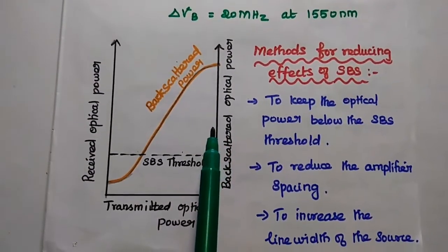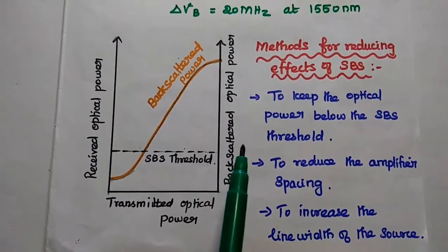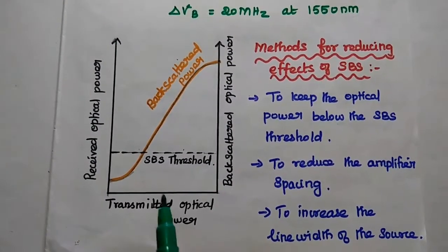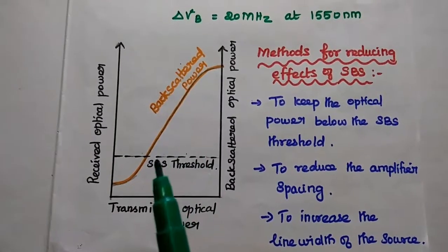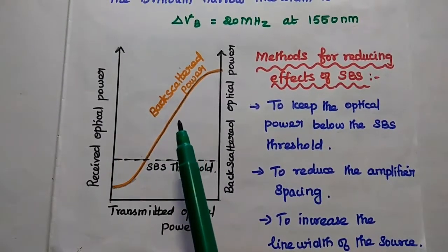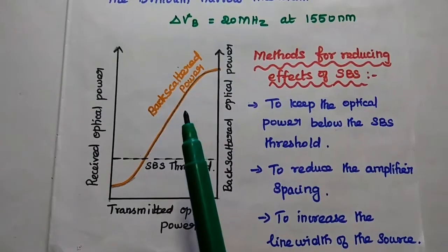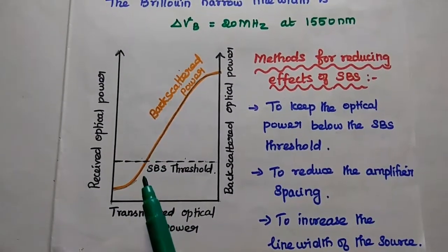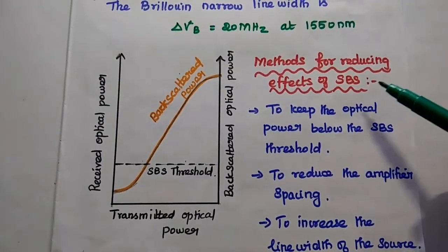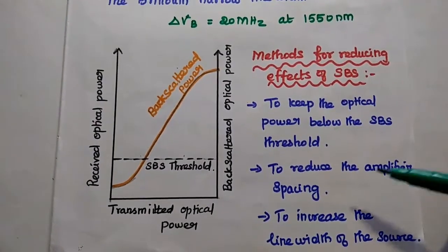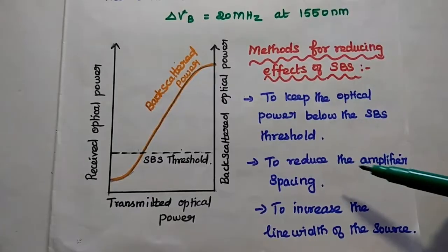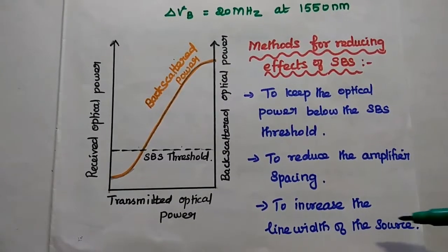Regarding the relation between transmitted, backscattered, and received optical power: whenever the transmitted optical power exceeds the threshold value, the backscattered optical power increases exponentially, which is the backscattering process. The received optical power is reduced whenever the incident power exceeds the threshold value. The SBS effect can be eliminated or reduced by three methods: keeping the optical power below the SBS threshold value, reducing the amplifier spacing, or reducing the linewidth of the source.